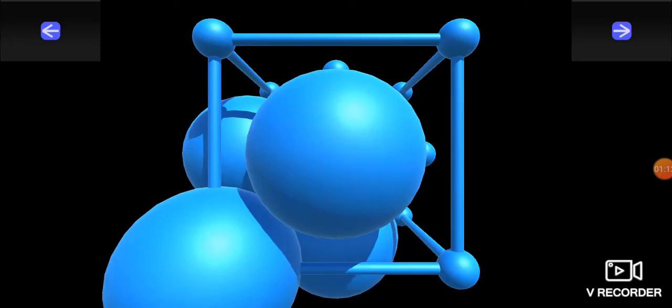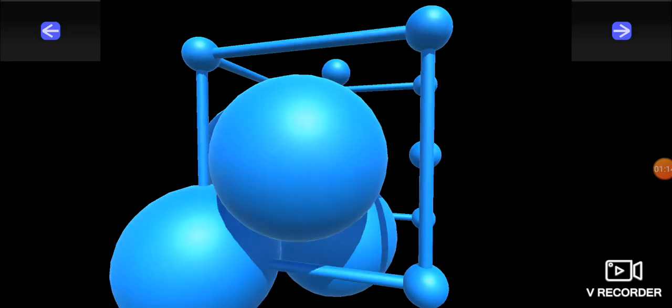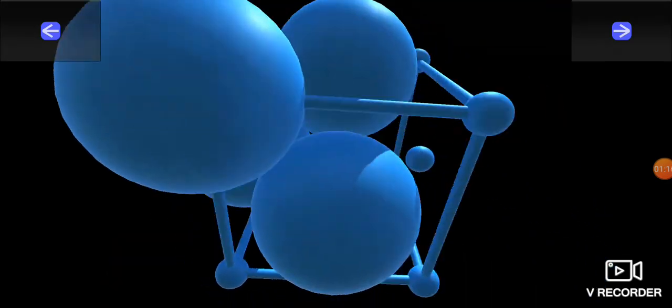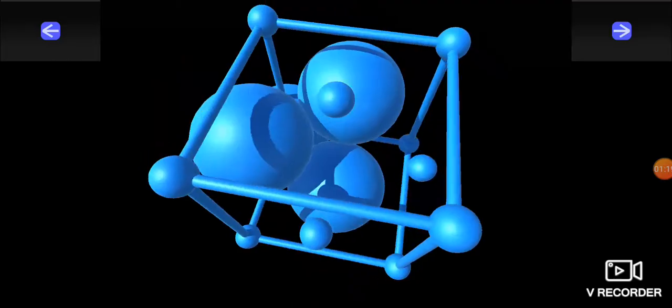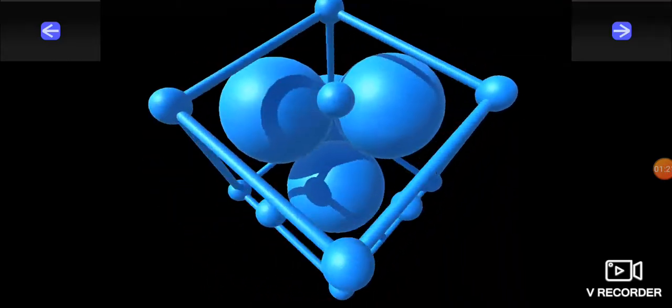This is the location of tetrahedral void in face-centered cubic unit cell. Four are combined and the empty space is tetrahedral void.